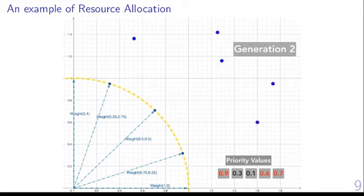Then we move to the second generation. We do the same, but with new priority values. As you can see, these values change over different generations. Now solutions 1, 4, and 5 are selected. And we change their solutions.